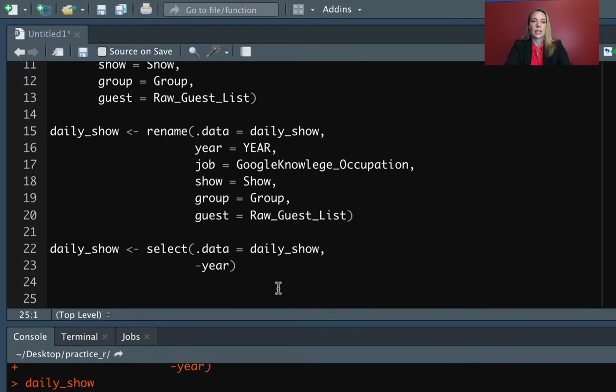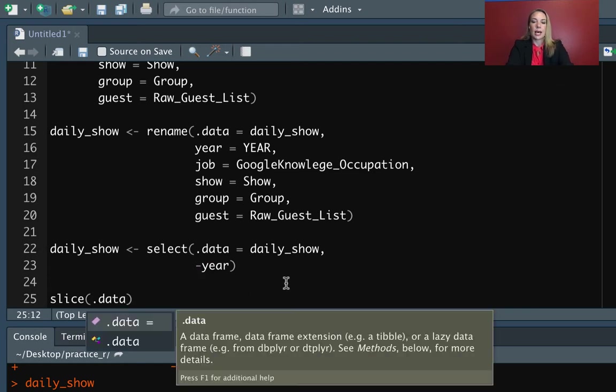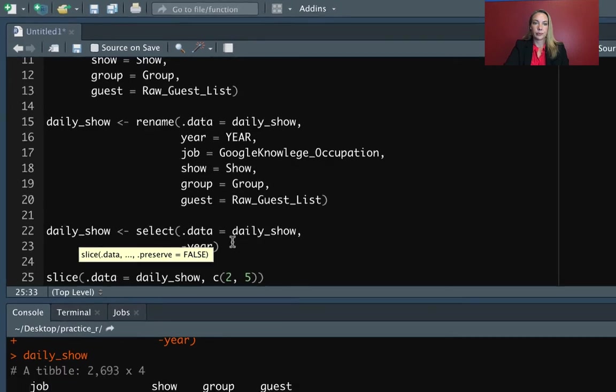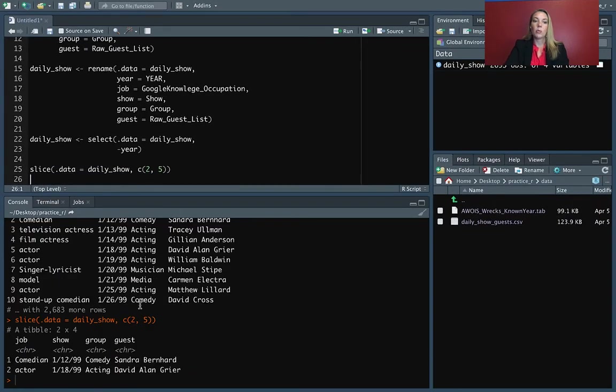So we can take a look at how to do that, and we'll use again that daily show data set. For slice, the first argument is going to be the data frame. In this case, we've got daily show that we'd like to use. And then we just say the positions that we want to pull. So if we wanted to pull the second and fifth rows, we can put that in with the vector for position two and position five. When I run that, you can see it's pulled out just those two specific rows.